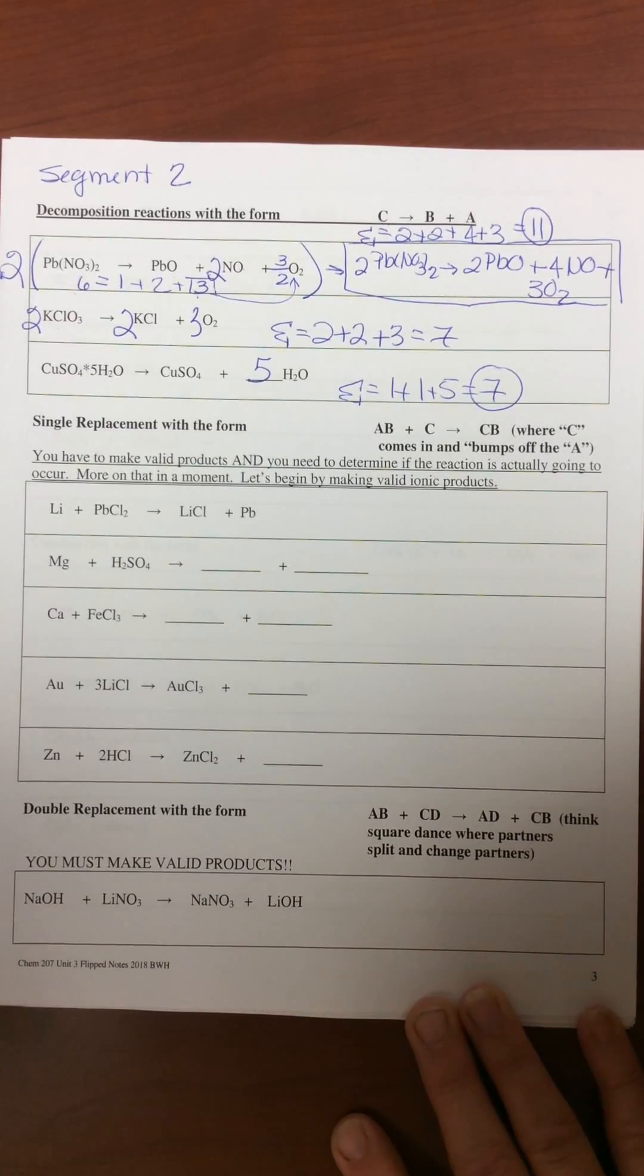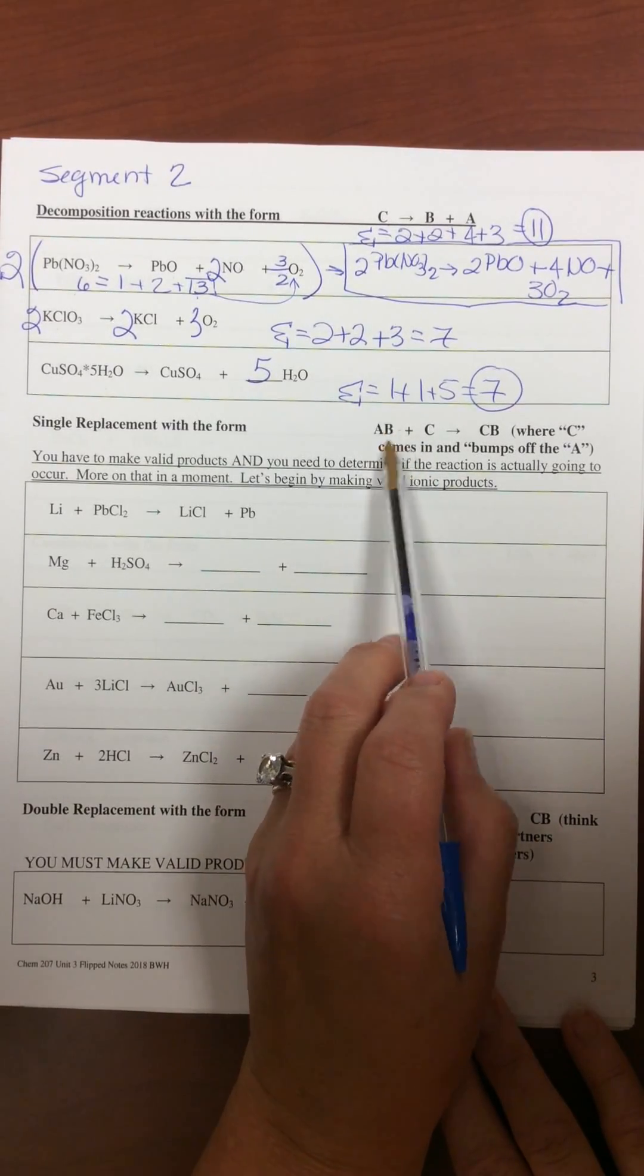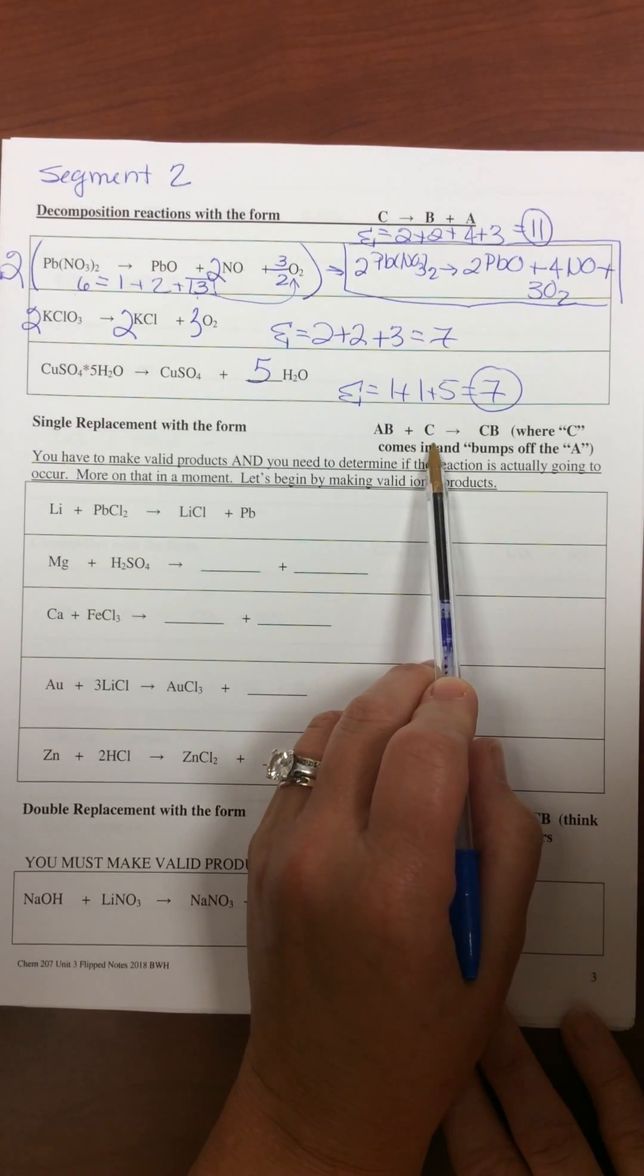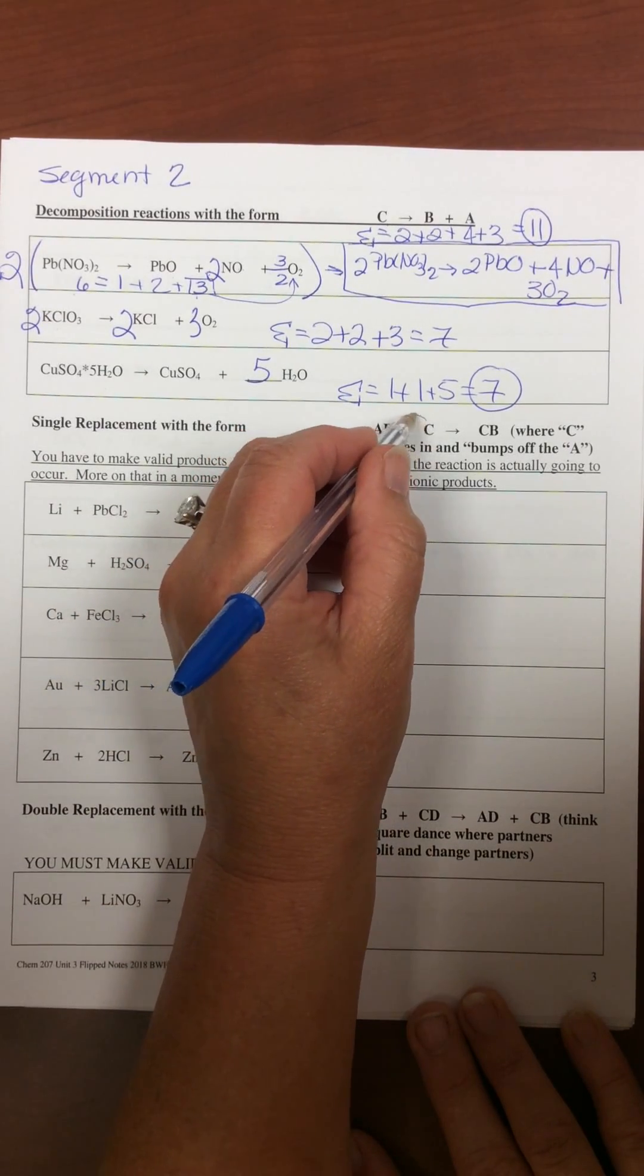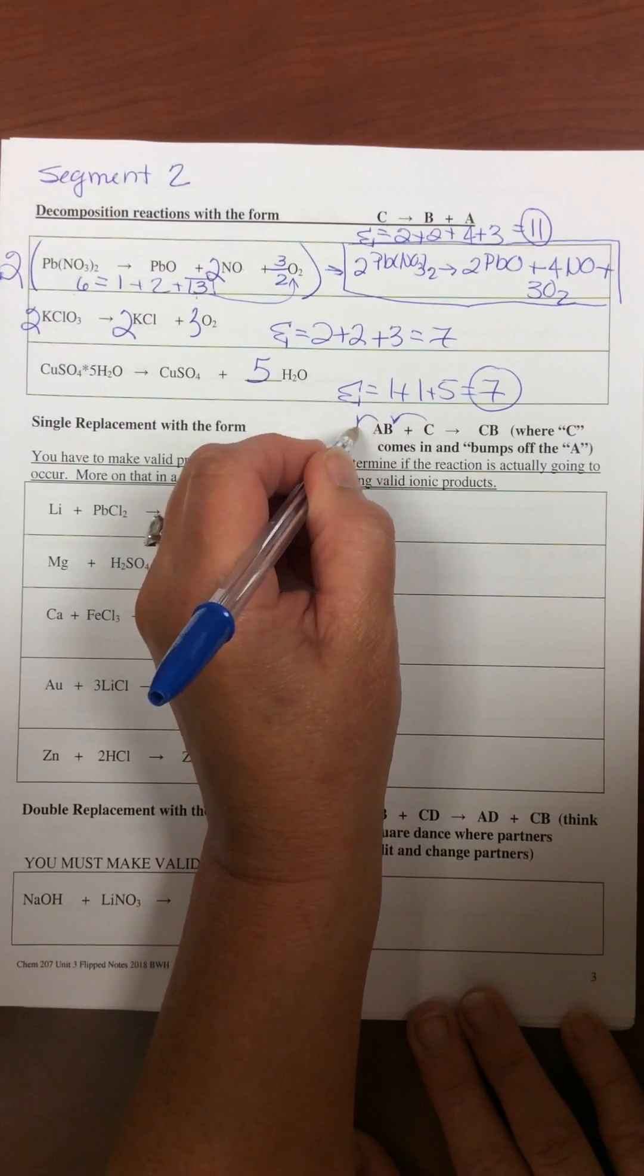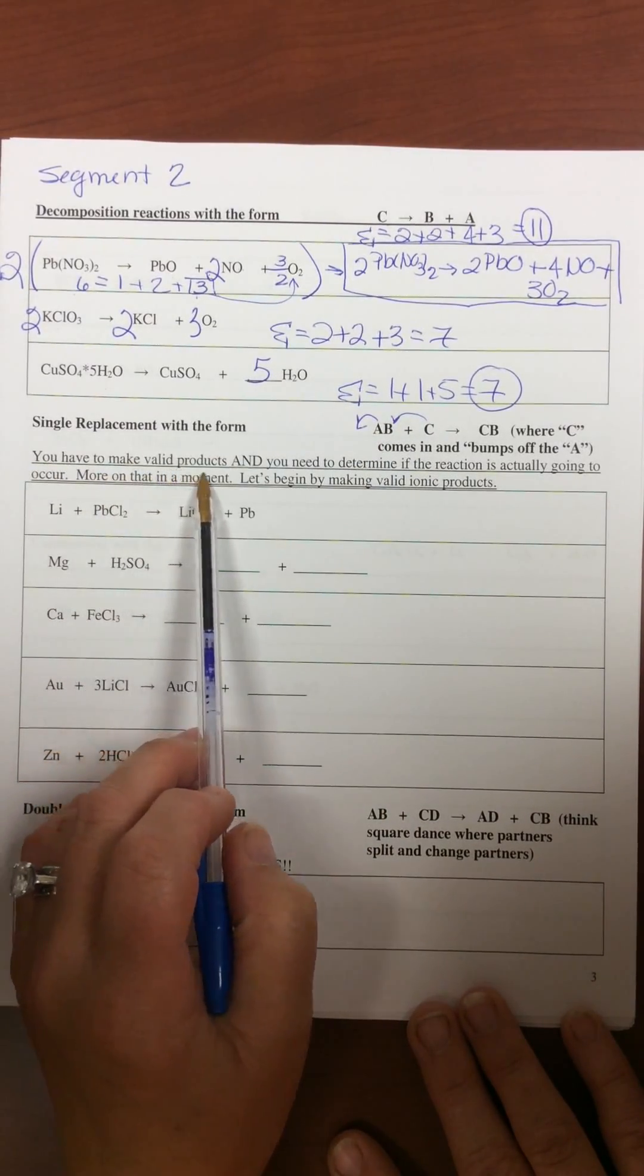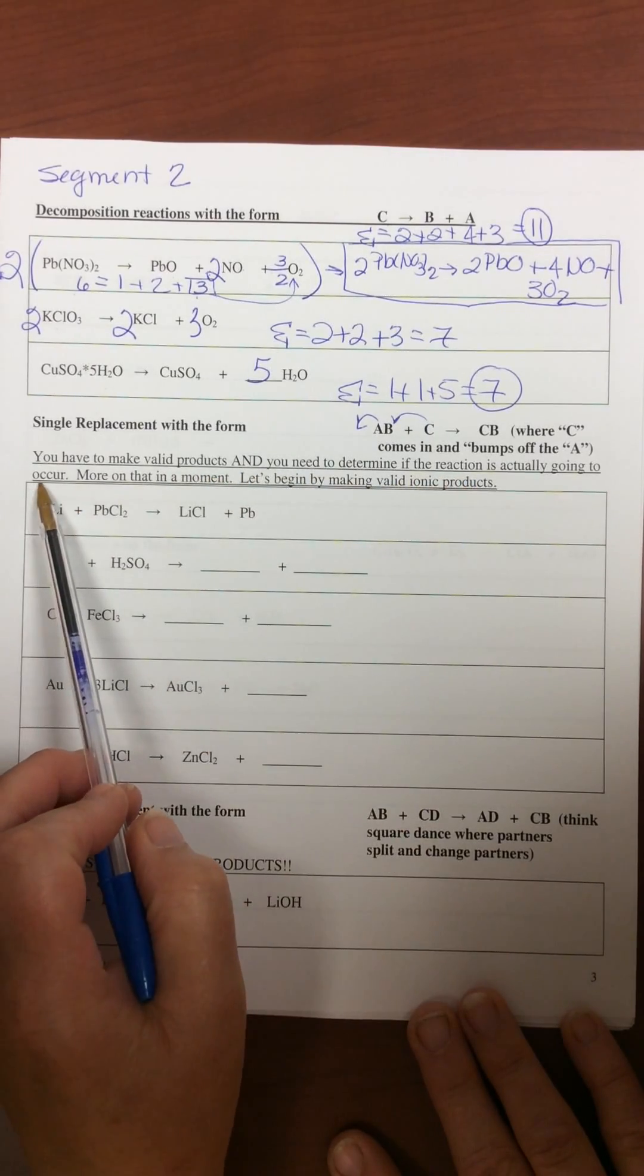Single replacement. Single replacement has the form of some sort of compound here, usually ionic, and something that is by itself, or in elemental form. Where C comes in and bumps off A, so to speak. So you have to make valid products, and you need to determine if it's actually going to occur.